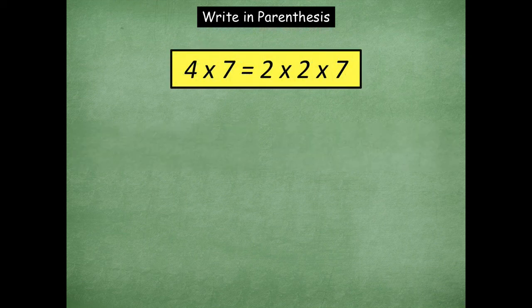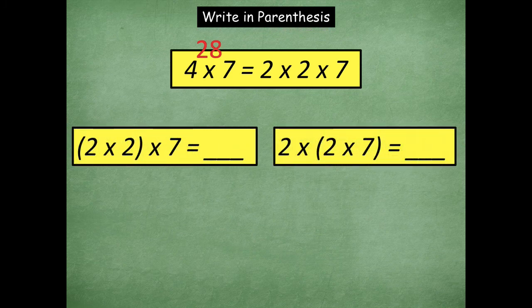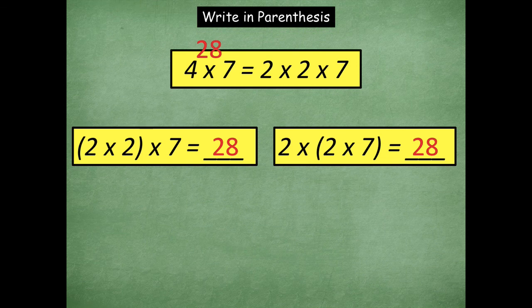Go ahead and pause the video, try this one, write out which way you're going to solve it, then click play when you're ready to go over it together. Here we go: seven times four is 28. You can put parentheses around the first two or the second two. Two times two is four, and four times seven is 28. Or with parentheses around the second two: two times seven is 14, and two times 14 is 28. I wonder which way you solved it!